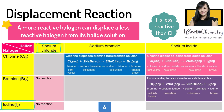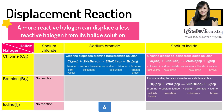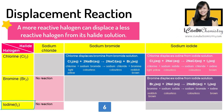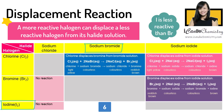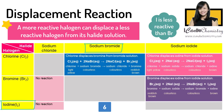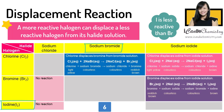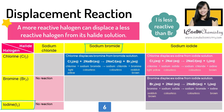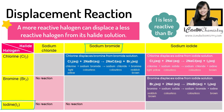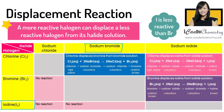Scenario six: aqueous iodine added to bromide solution. Again, iodine is less reactive than bromine, hence iodine is unable to displace bromine from bromide solution. Hence in this case, there is also no reaction.